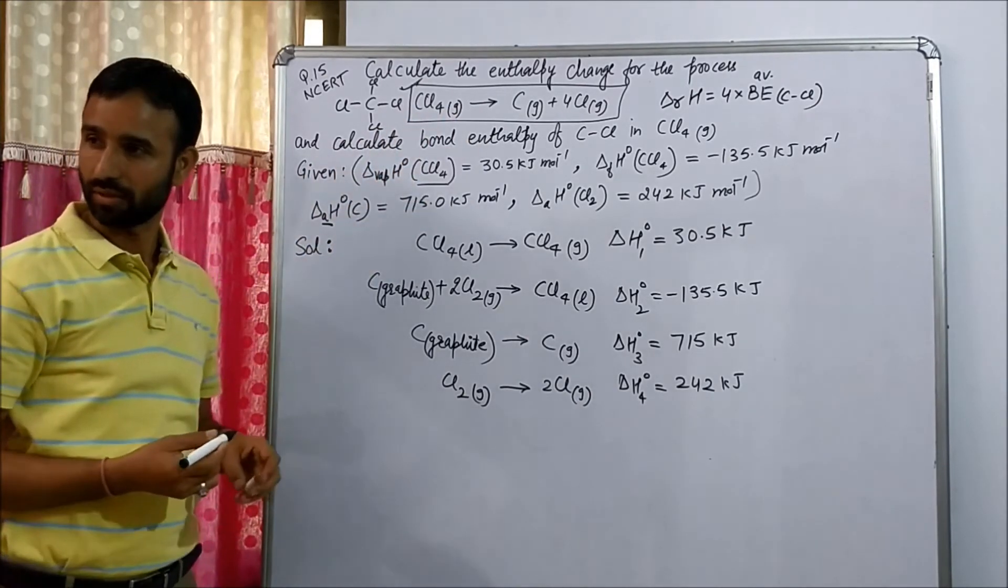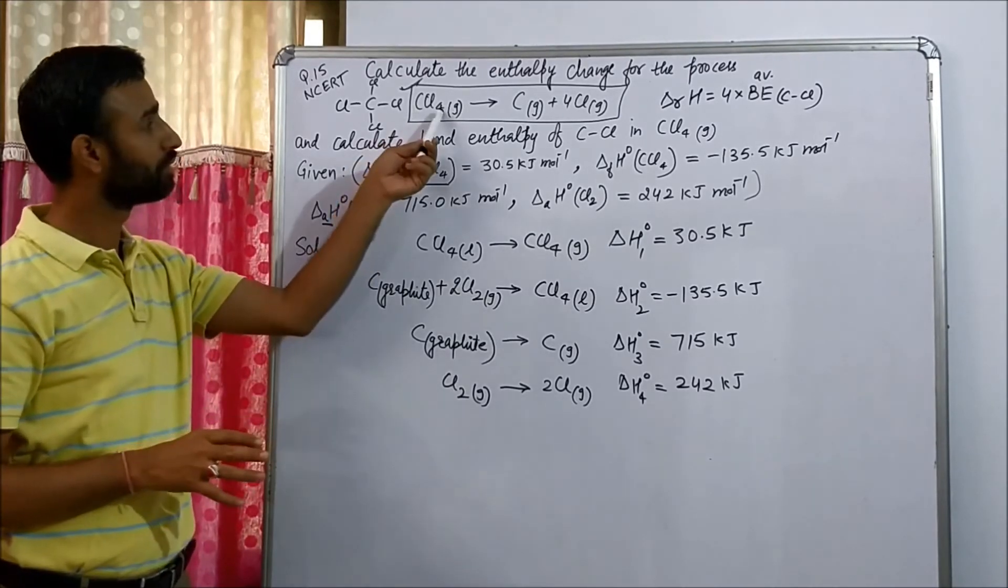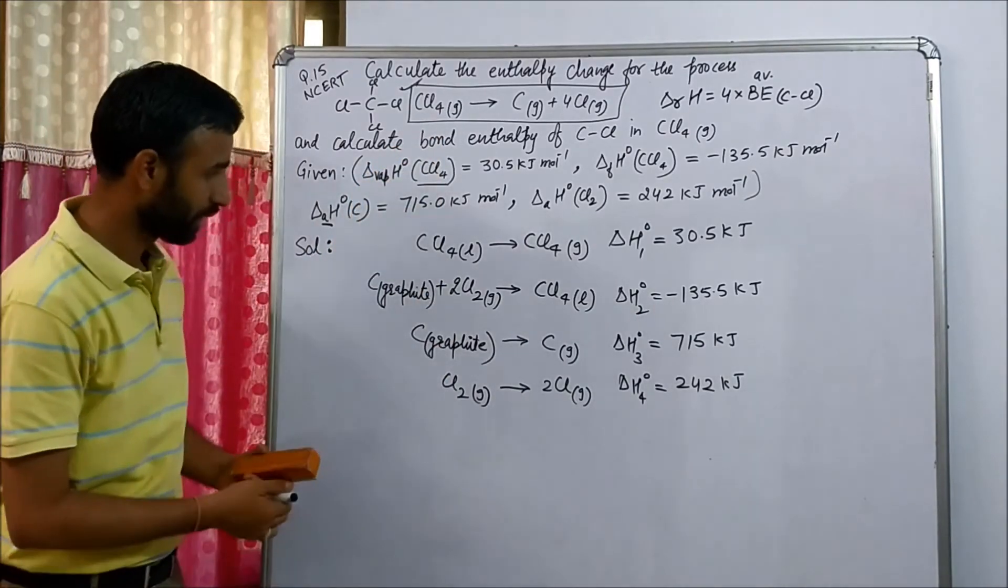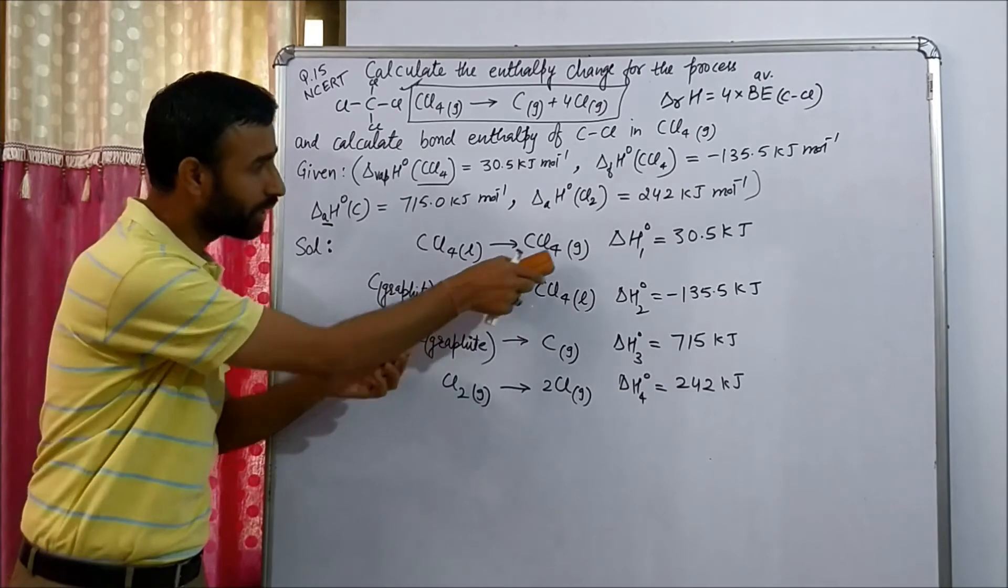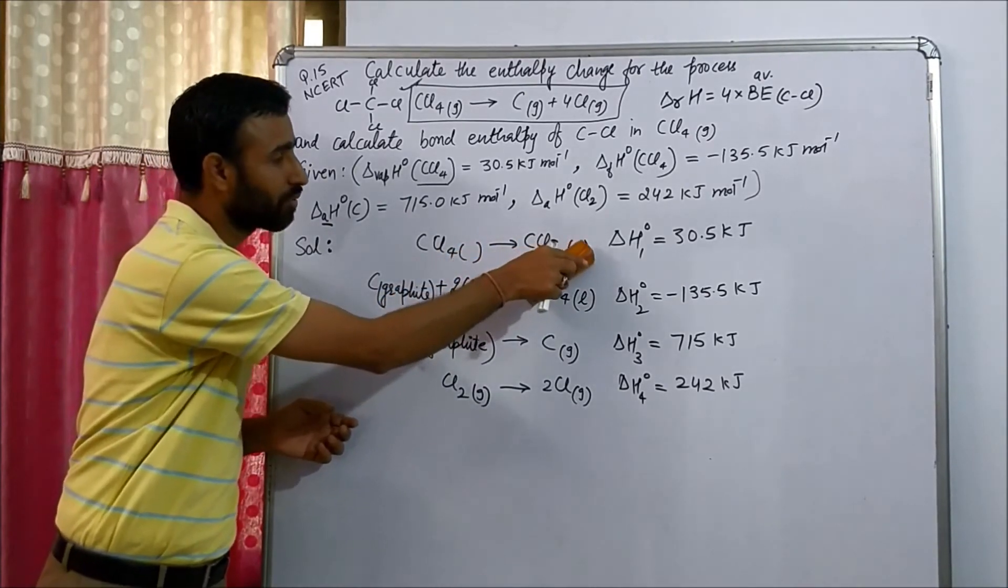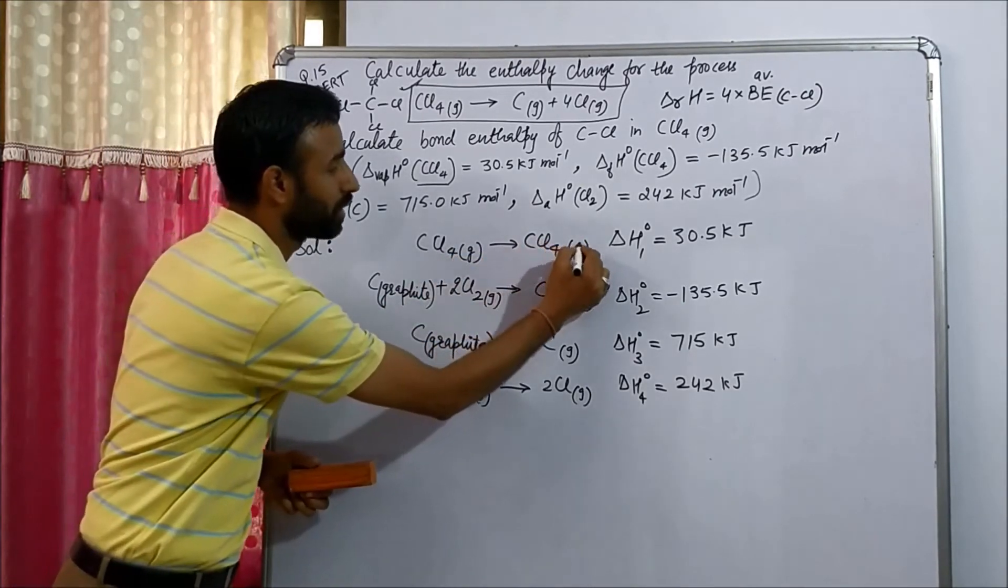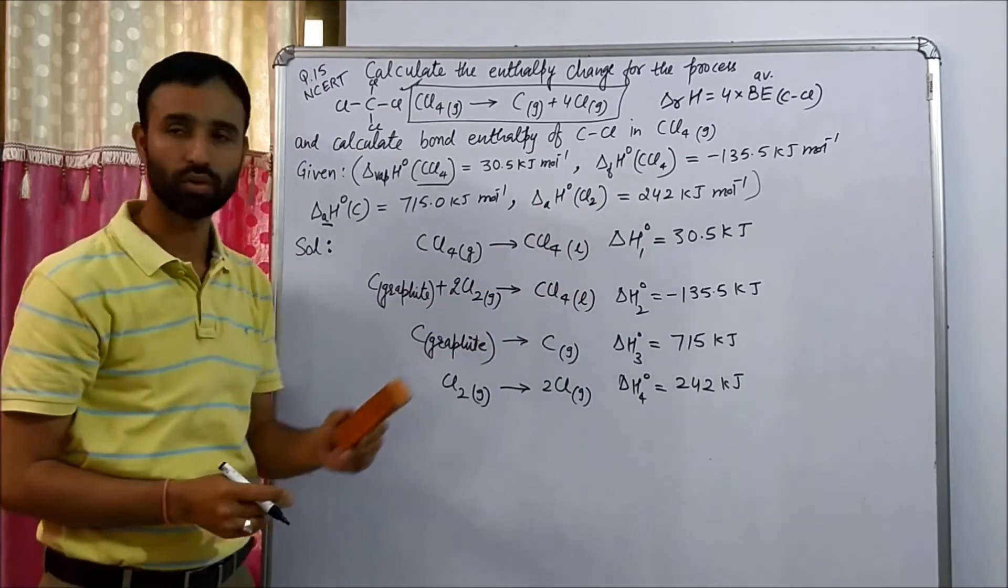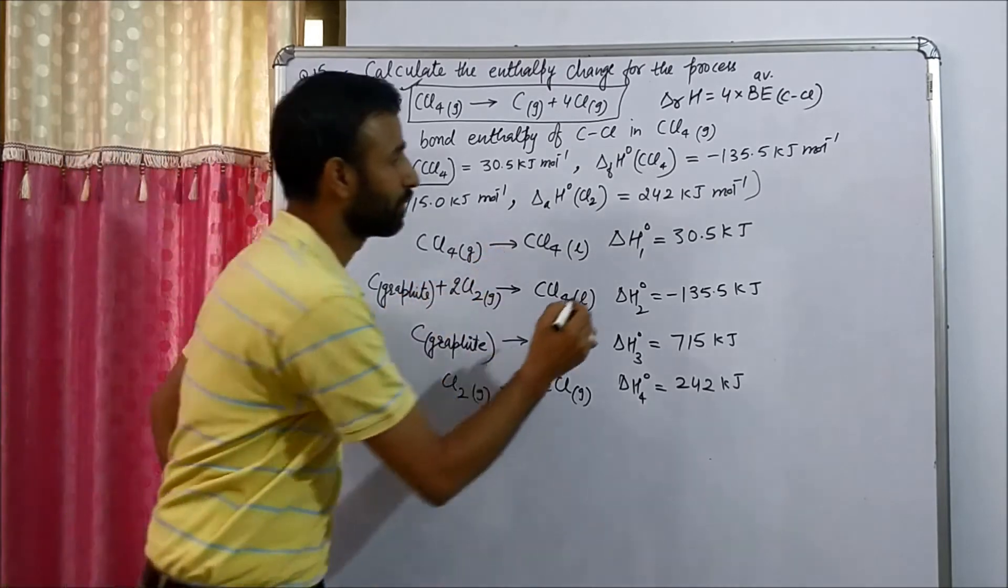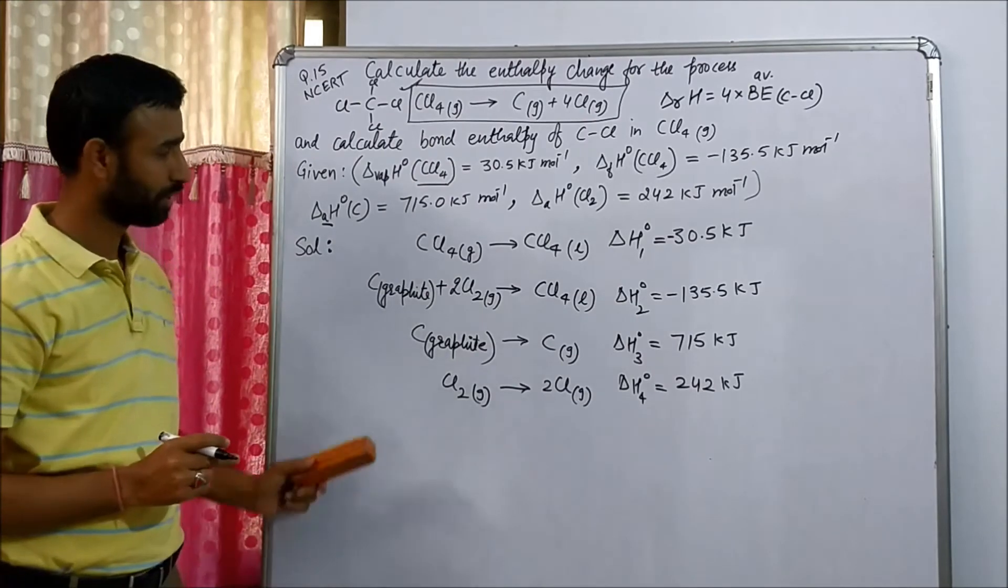CCl4 gas is required on which side? Left side. CCl4 gas is required on left side and CCl4 gas is only in this case. So we reverse the equation. CCl4 gas to CCl4 liquid. So if we reverse, what about the sign? Negative. Because it is plus, so it becomes minus 30.5 kilojoules.